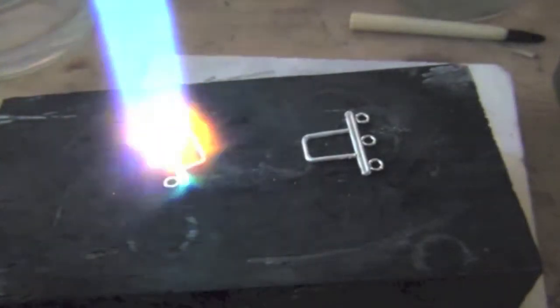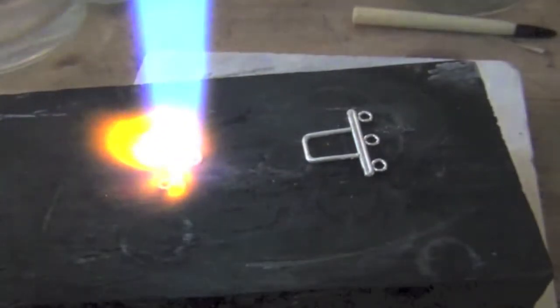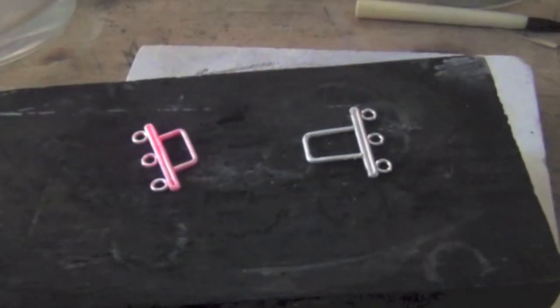I have coated all the parts in flux and placed them on the charcoal block. When I see the bright orange flame, I know that I'm at the fusing temperature.